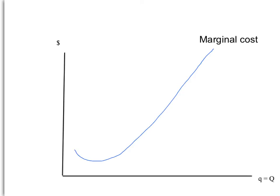The difference for monopoly is that unlike a price-taking firm, the monopoly faces the market demand for the product, and the market demand is usually sloping down. We've drawn our market demand on here — let's label it — remembering that the market demand is also the firm demand for a monopolist because it is the only seller in the market.